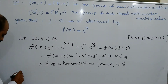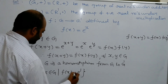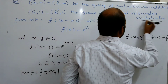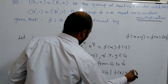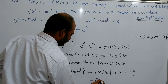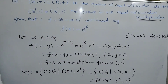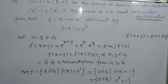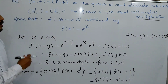Now find kernel f. Kernel f = {x ∈ G : f(x) = E'}, where E' is the identity element in G'. Since G' is a group under multiplication, its identity is 1. So kernel f = {x ∈ G : f(x) = 1} = {x ∈ G : eˣ = 1}. Those elements x which satisfy eˣ = 1 belong to the kernel. Practice these two problems.